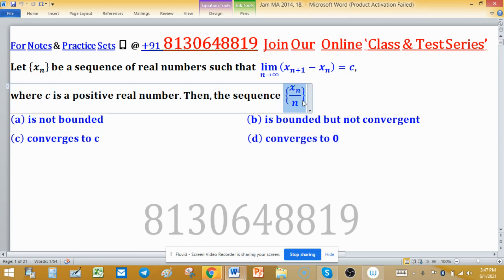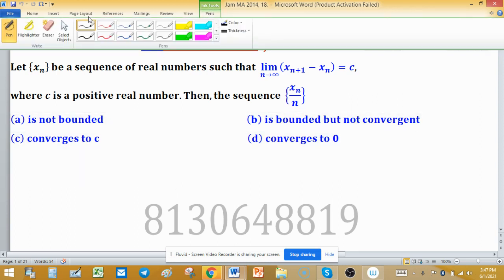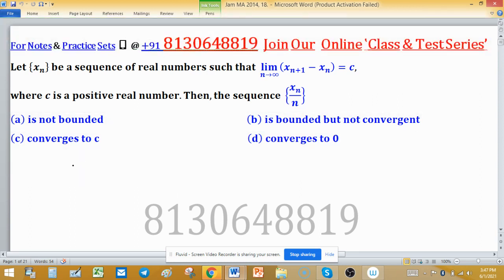We have to remember some points: if a sequence is convergent, then it must be bounded, and the limit of convergence is unique. XN is given as a sequence of real numbers.